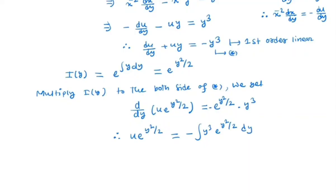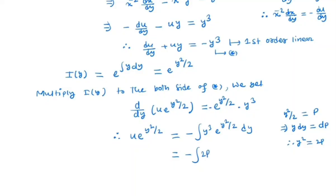For the right-hand side integration, we make a transformation of variable. We put y squared by 2 as p, so by differentiating we have y dy equals dp. Also, y squared equals 2p, and e to the power y squared by 2 equals e to the power p. Since y cubed equals y squared times y dy, we substitute to get minus 2 times the integral of p times e to the power p dp.